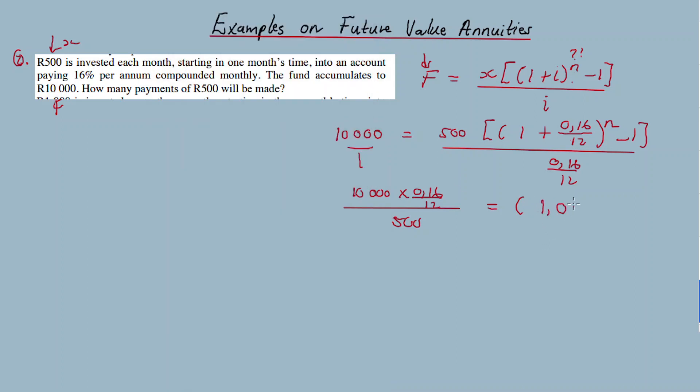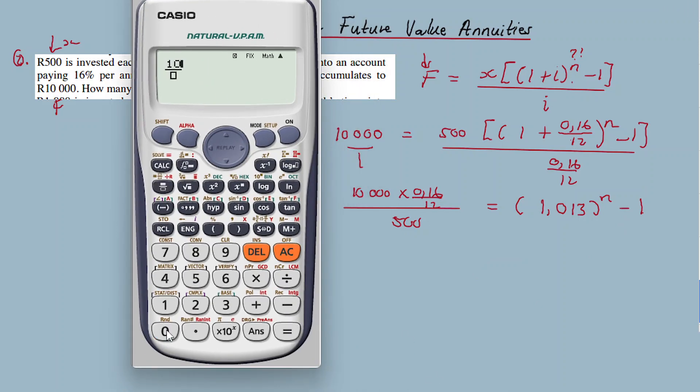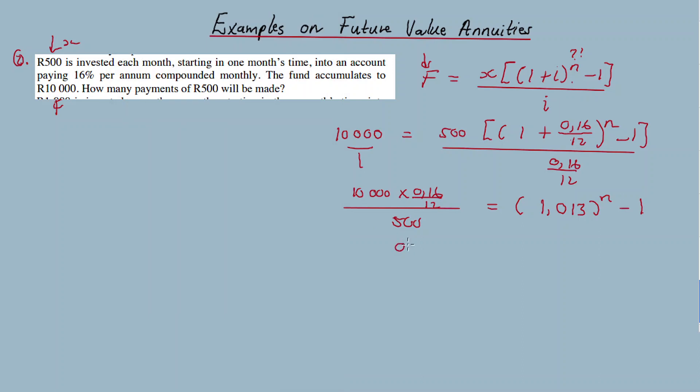We cross multiply, so 10,000 times 0.16 over 12 divided by 500, then one plus the bracket is 1.01333 in three decimal places minus one. Make sure you keep the calculation clean, especially now when calculating n, because sometimes it can get messy. So we calculate the left-hand side: 10,000 times 0.16 over 12 divided by 500. The answer in three decimal places is 0.27.